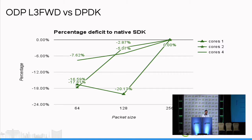This graph shows ODP-DPDK versus native DPDK. We can see there is some performance gap compared with native DPDK. For small packet sizes there is about 70% degradation compared with native DPDK. When we increase the packet size to 2056 bytes, we can see the performance data reaches line rate.